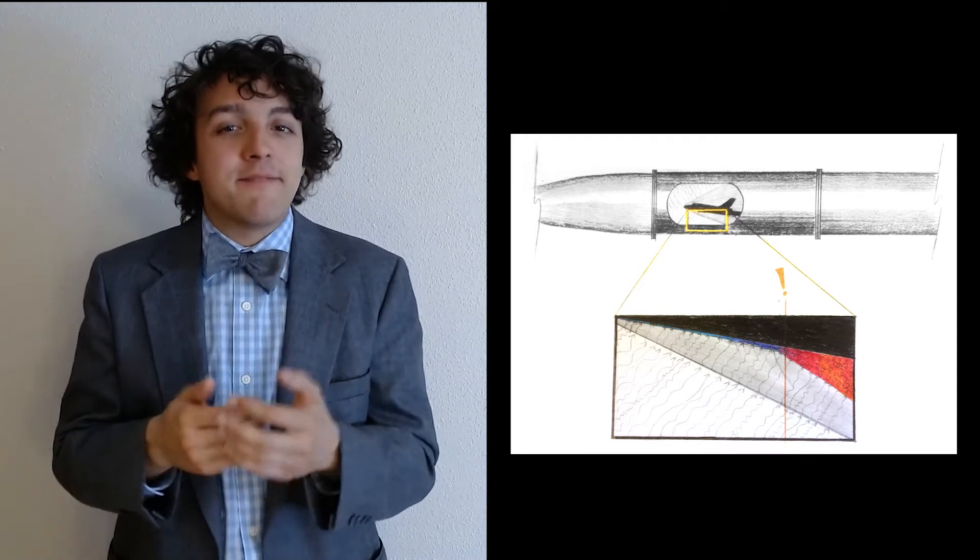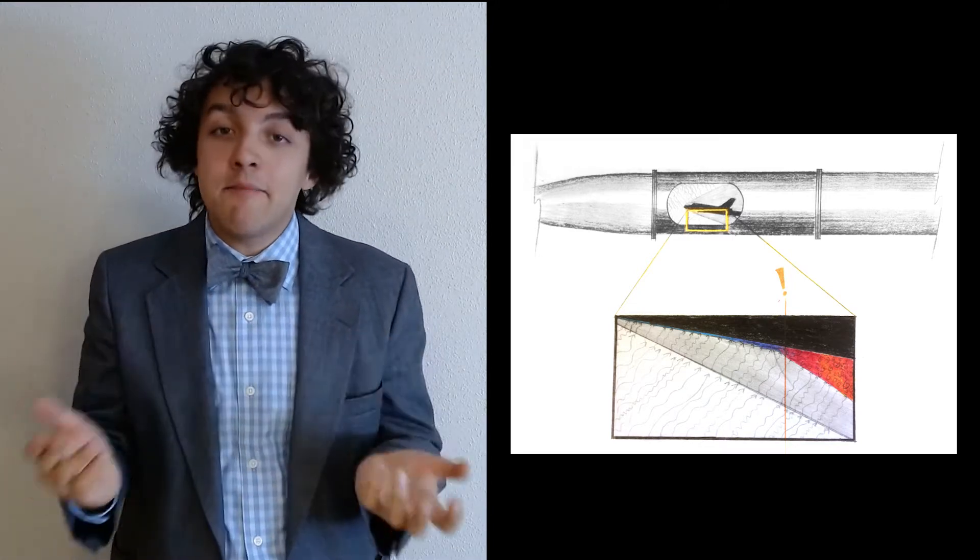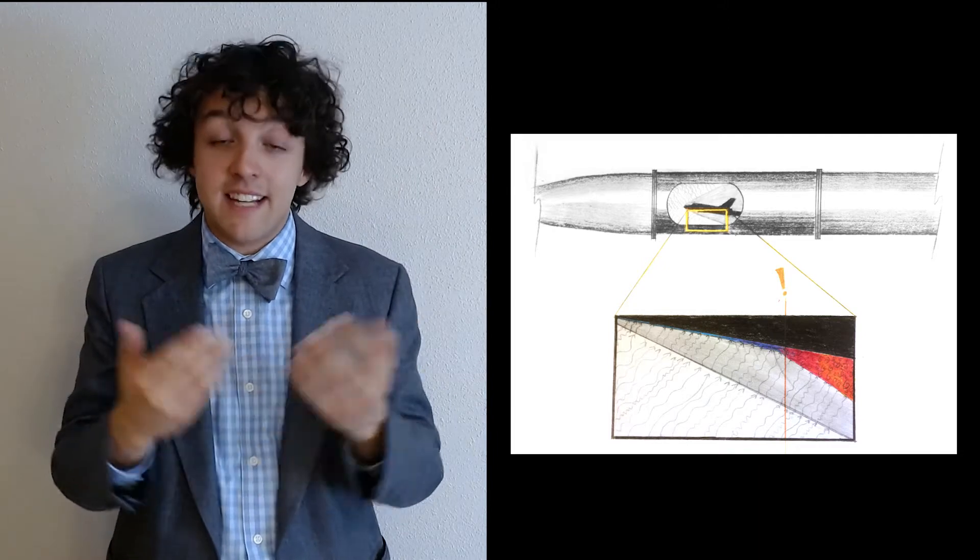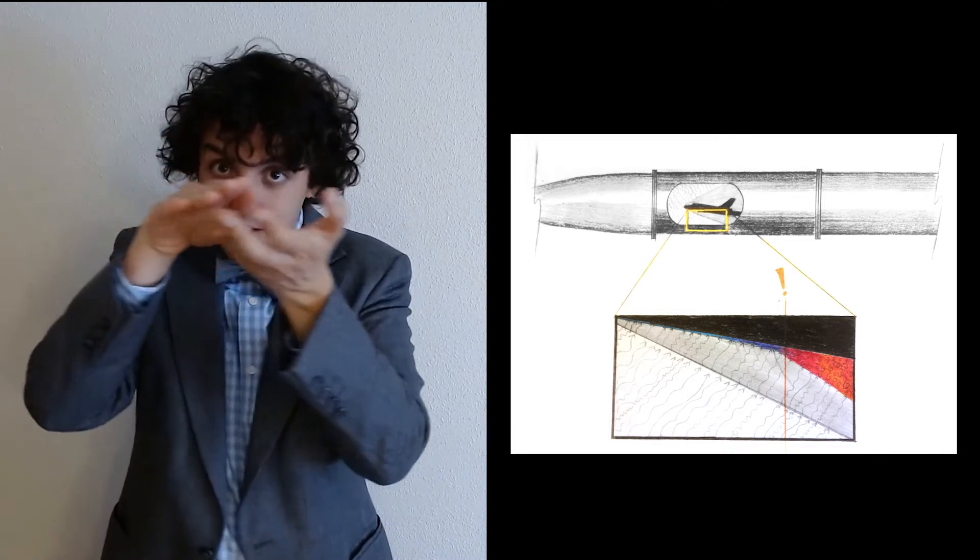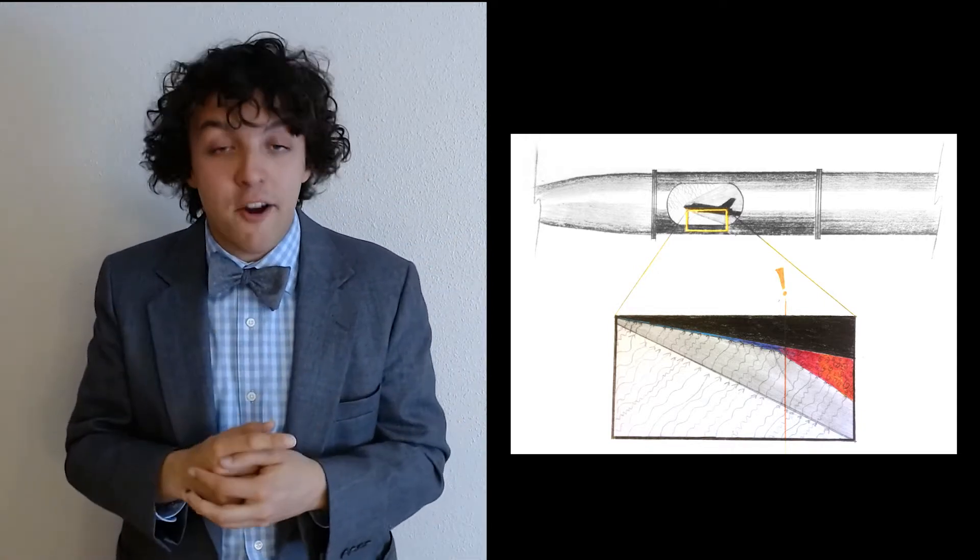So what is a boundary layer? Well, imagine a jet flying through the atmosphere. It might be tempting to think that the jet just pushes all the air around it out of the way and that's that. However, in reality a small amount of air sticks to the surface of the jet due to friction. That thin layer of air? That's what we call a boundary layer.